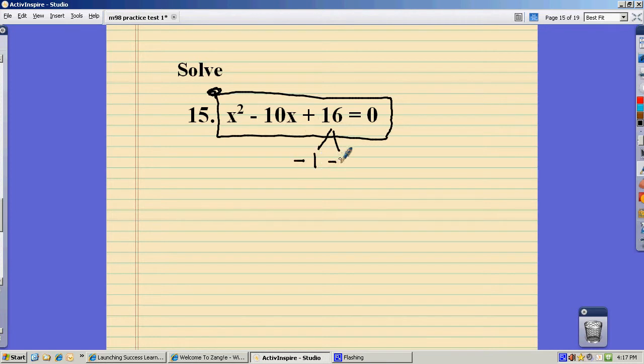So I could just start listing factors of 16. Negative 2, negative 8, negative 4, negative 4. Oh, it's right here, negative 2 and negative 8, I see it. So those two multiply to positive 16, add to negative 10.